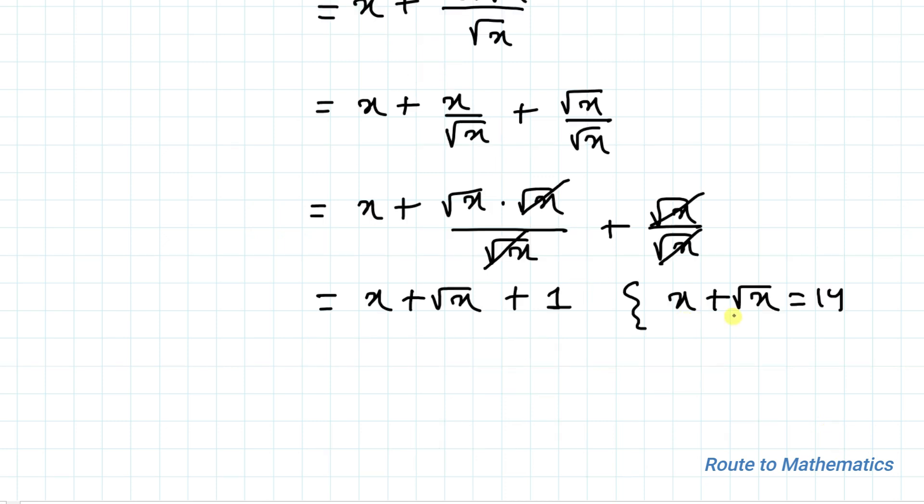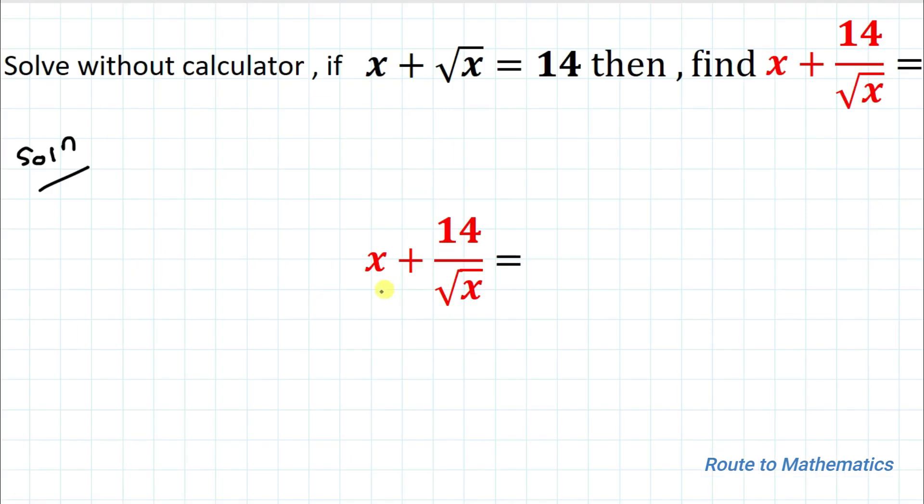Let's just put the value of x plus root x equals 14 here. So we have 14 plus 1 equals 15. Thus the value of x plus 14 by root x is 15, which is our answer. I hope you have understood the solution.